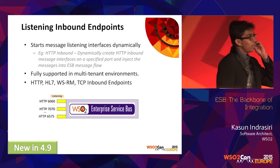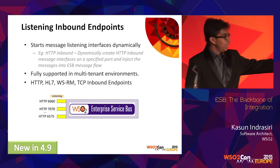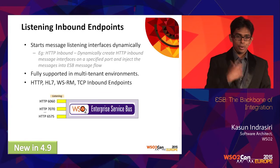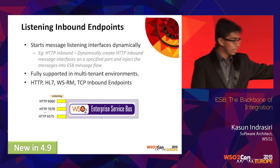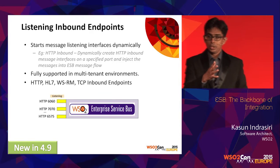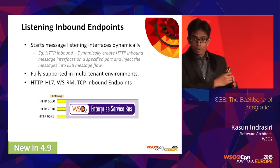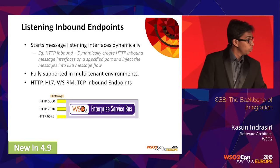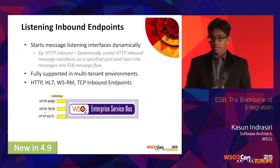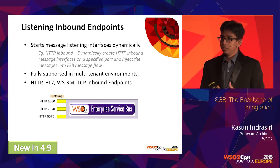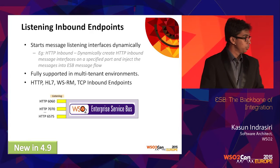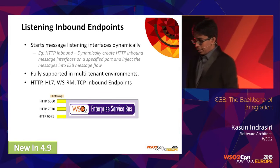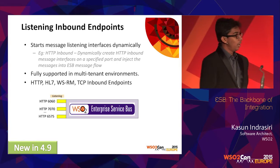Looking at listening inbound endpoints in detail: you can create any HTTP inbound messaging channel by configuring an HTTP inbound endpoint, and it will start listening on a specific port. When you send a request to that port, you correlate the inbound endpoint with a sequence and the message is injected into the ESB message flow. This is fully supported in multi-tenanted environments, meaning two tenants can listen on two different HTTP ports. Currently we support HTTP, HL7, WS-Reliable Messaging, and TCP as inbound listening endpoints.